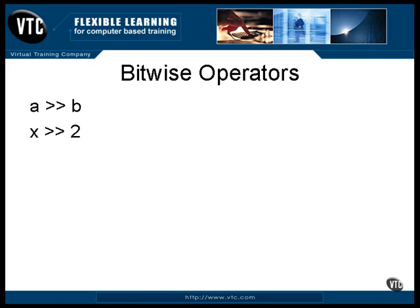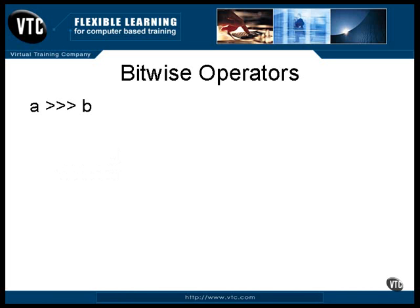So the sign of the number is extended to fill the space. The bits shifted off to the right are lost. This example shows a byte being shifted two positions to the right and having its sign extended.